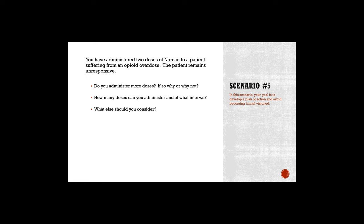Scenario four: you've administered two doses of Narcan to a patient suffering from an opioid overdose, but the patient remains unresponsive and is not reacting to the Narcan. What do you do? How many more doses can you give, and at what interval?